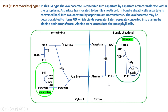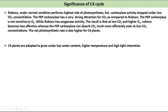Regarding the significance of the C4 cycle: under normal conditions, Rubisco performs the highest rate of photosynthesis, but its carboxylase activity stops under low CO2 concentrations. PEP carboxylase has a very strong affinity for CO2 compared to Rubisco, and PEP carboxylase is not sensitive to O2, while Rubisco has oxygenase activity. As a result, at low CO2 and higher O2, Rubisco becomes less effective whereas PEP carboxylase can absorb CO2 much more efficiently even at low CO2 concentrations. The net photosynthetic rate is also higher for C4 plants, which are adapted to grow under low water content, higher temperatures, and high light intensities.